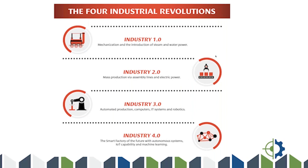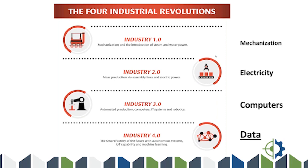It's useful to go through where we came from. Industry 1.0 was really about mechanization as power became available to harness. The second stage was the introduction of electricity and assembly lines. The third stage, around the 1980s and 90s, was computerization — automated production, computers, IT, and robots. The fourth stage — Industry 4.0 — is what a lot of people think of as the smart factory, the factory of the future, with autonomous systems, IoT, and machine learning.